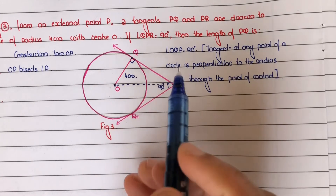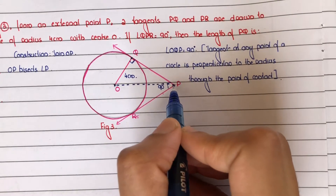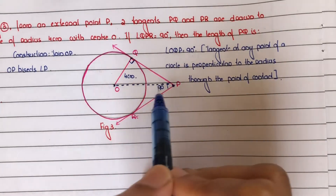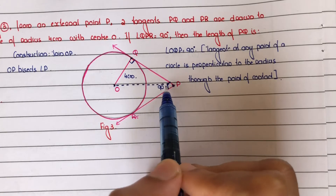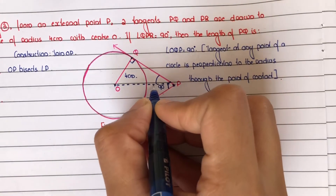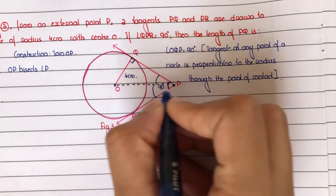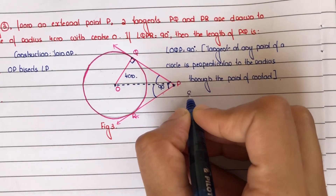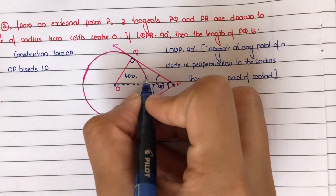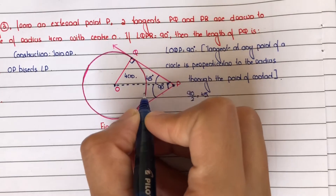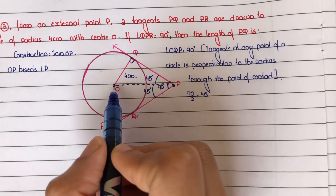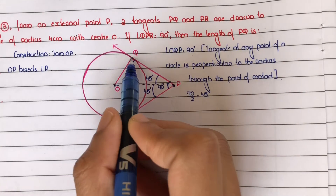OP bisects angle P, and it is given that angle P equals 90 degrees — that is, angle QPR equals 90 degrees. So OP bisects angle P, meaning each half is equal to 45 degrees. So each angle QPO is equal to 45 degrees.